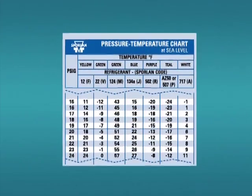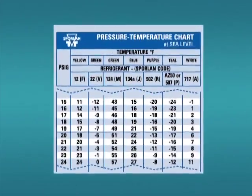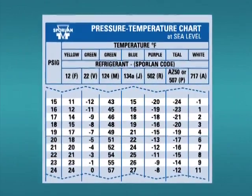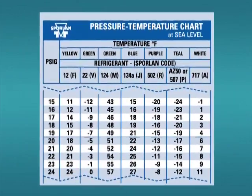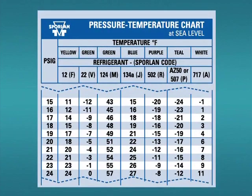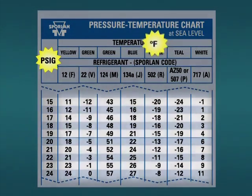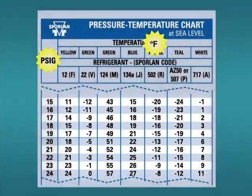The pressure temperature relationship as shown in the PT card is simply a chart listing the boiling temperatures of the refrigerant. By convention, a PT card has pressures listed on the left side of the chart and the corresponding boiling temperatures for each of the listed refrigerants on the right. Refrigerant at these conditions is referred to as saturated.